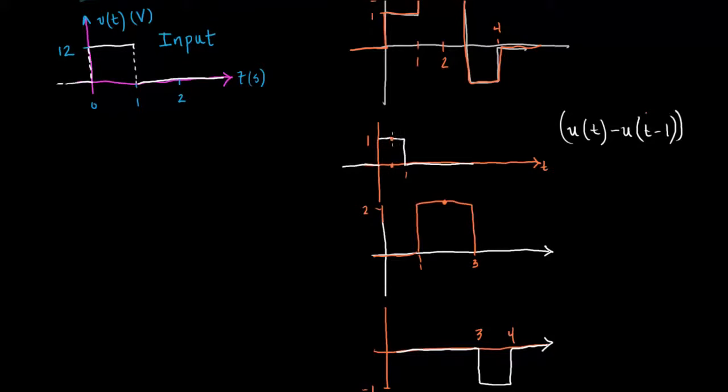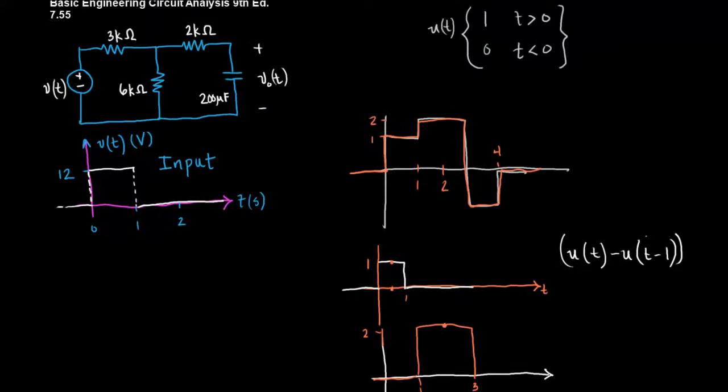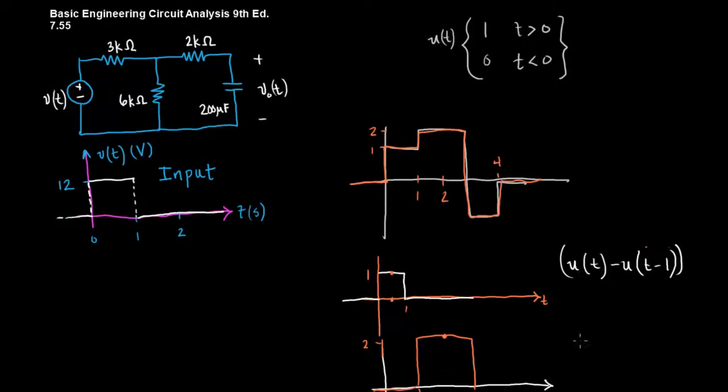And we can try out a point inside and a point outside and see what happens. Let's look at the point t equals one half. So when t equals one half we get u of one half. That's greater than zero and so we get one here. Now we get t equaling one half and we get one half minus one. Well that's minus one half and so that is less than zero and so it equals zero. So we get one minus zero and that equals one. So our output here is one. And in fact if you look at all points between zero and one you'll see that it is always going to output a one.